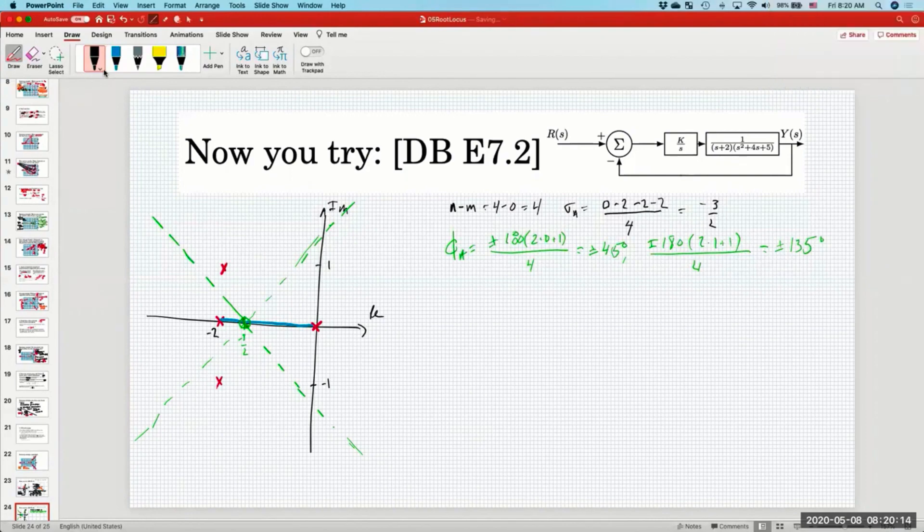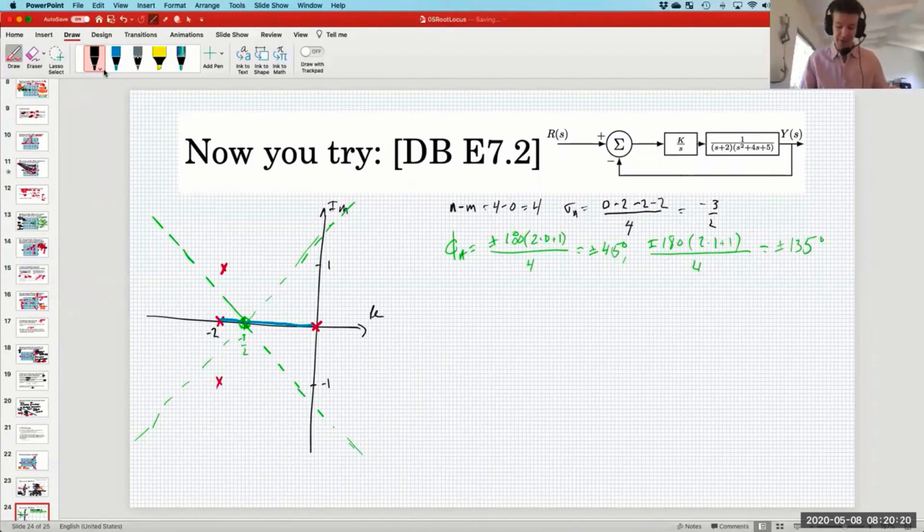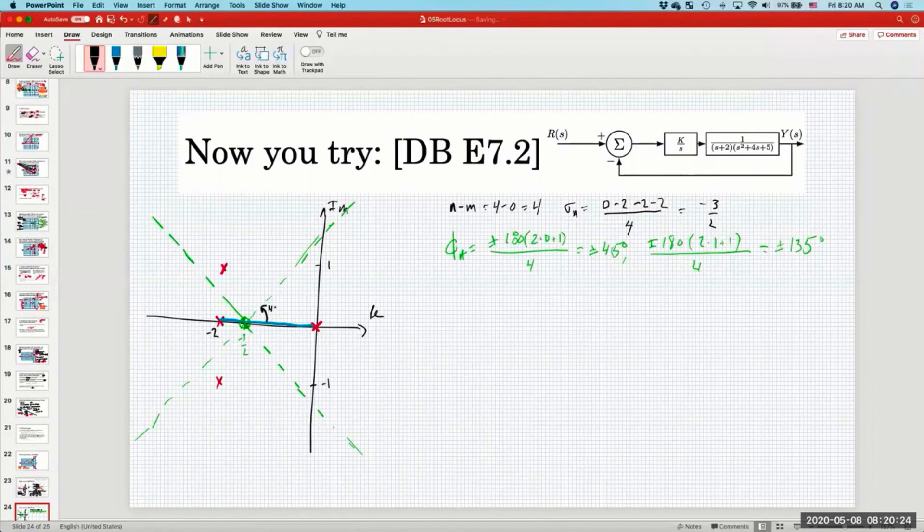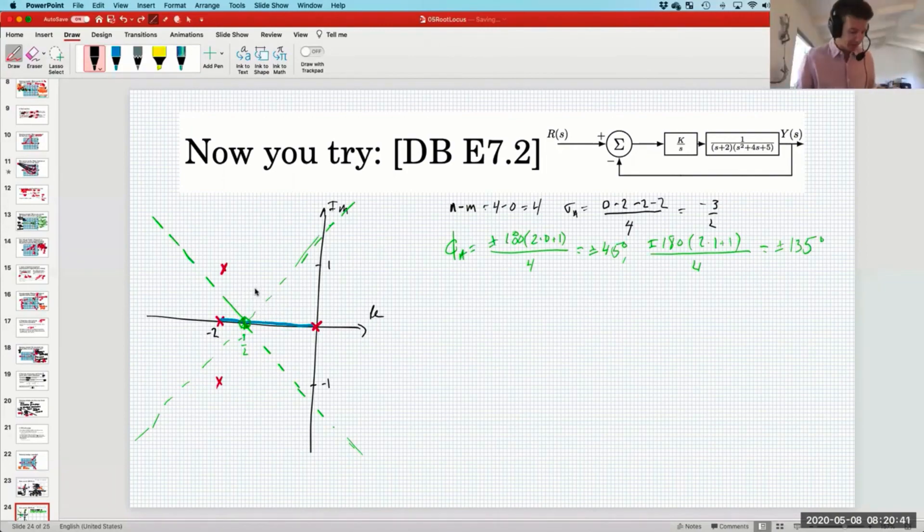These are going to emanate from the center of mass at plus and minus 45 and 135. So there's one and there's the other. So these are where the branches will head as k gets large. I'll pause there for questions.